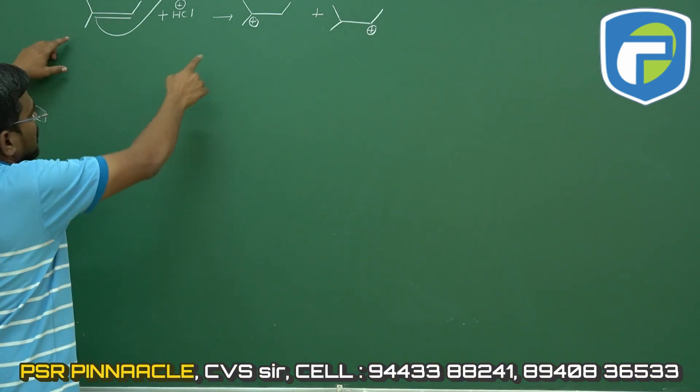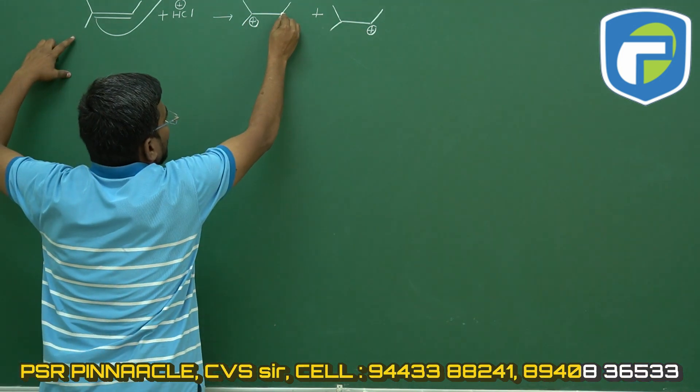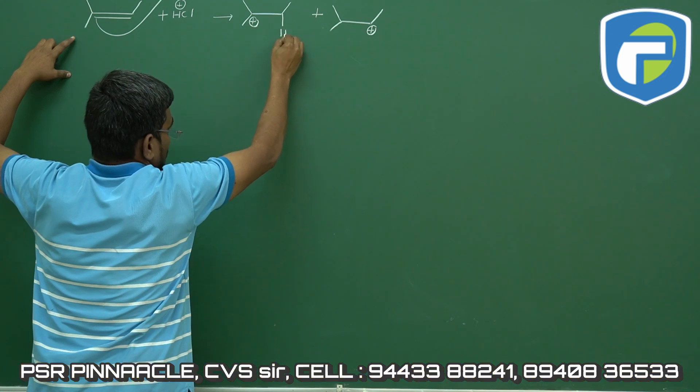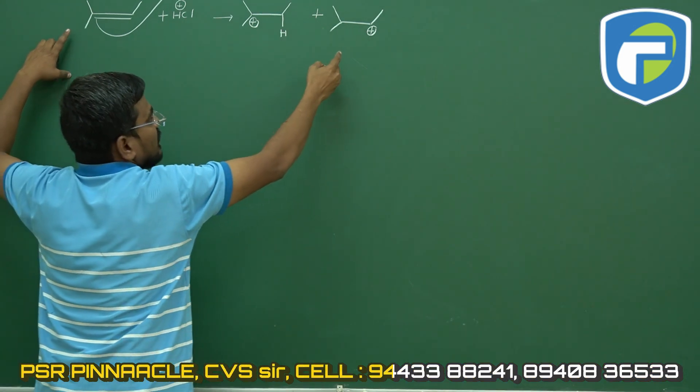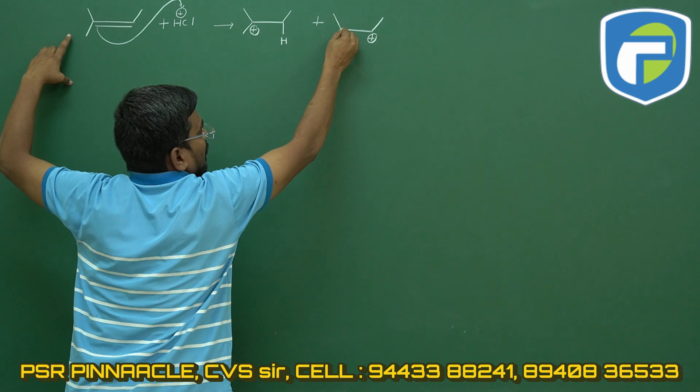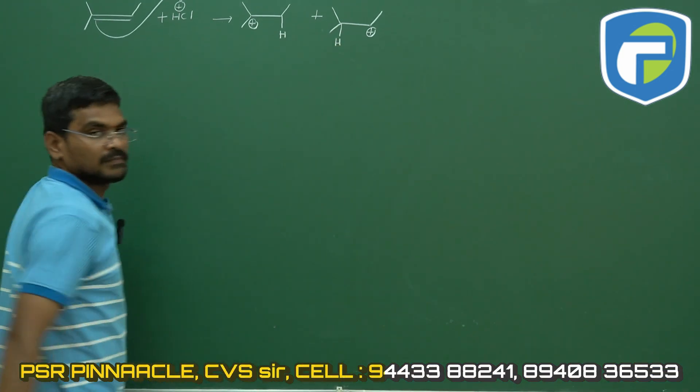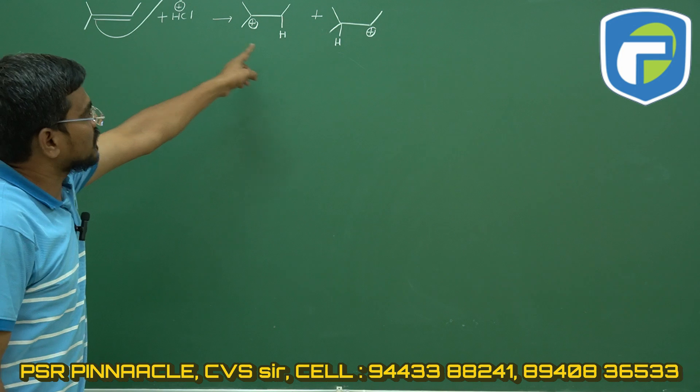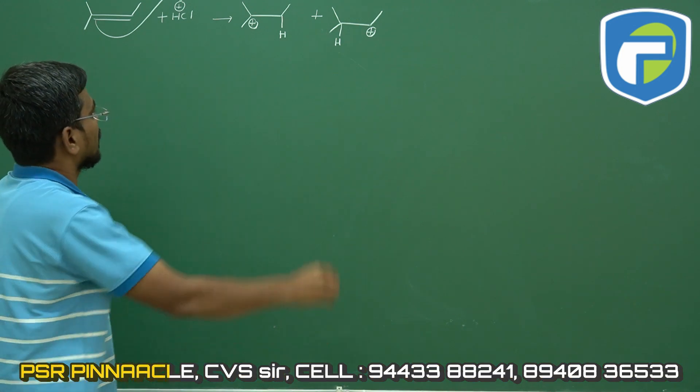So if carbocation is generated here, then electrophile is attacked in this place. If carbocation is generated at that carbon, electrophile is attacked in this place. So like this we can identify two kinds of carbocation.